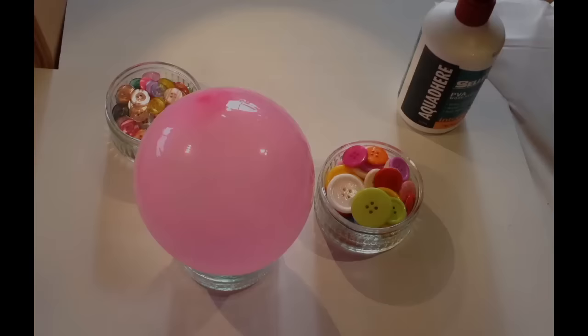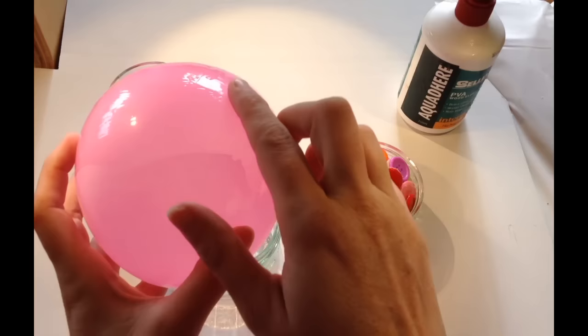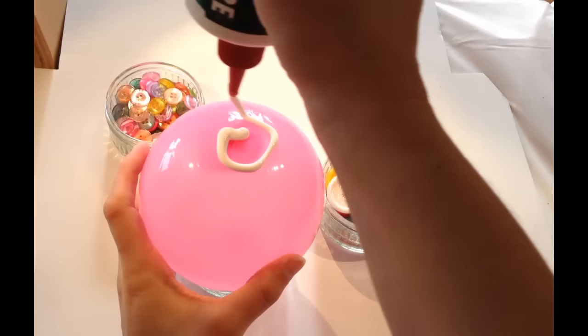So now we've let the glue dry on our balloon. As you can see there's a beautiful layer of glue there. The next step for us, with more glue, start sticking some of these buttons on. This is the fun bit. This is the bit where we're going to start to see how our bowl is coming together.